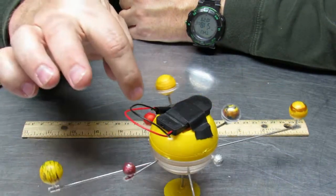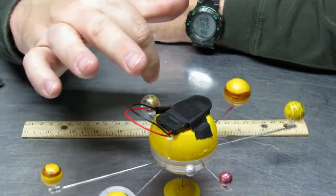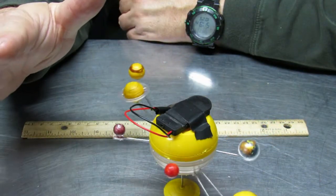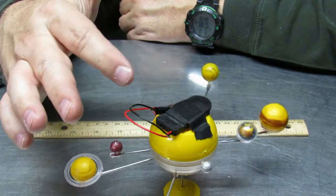In this particular case, this is showing a model of the solar system, and this is an estimation of sorts, since it doesn't actually show the distances between planets.